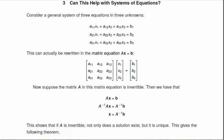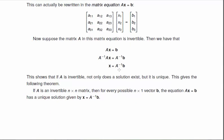So if A is invertible, then I can multiply both sides by the inverse and get that x is equal to A inverse of b. So if A is invertible, not only does the solution exist, but it's unique.